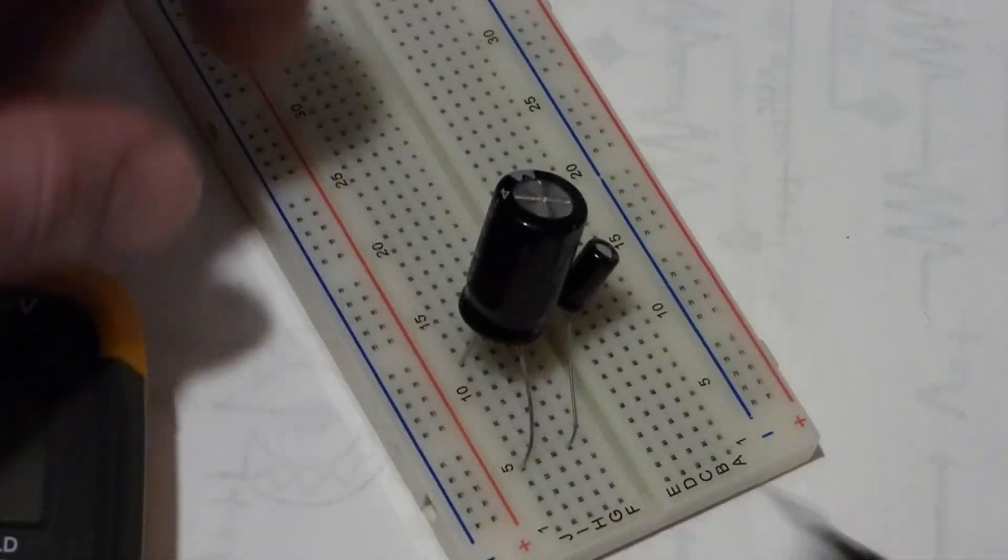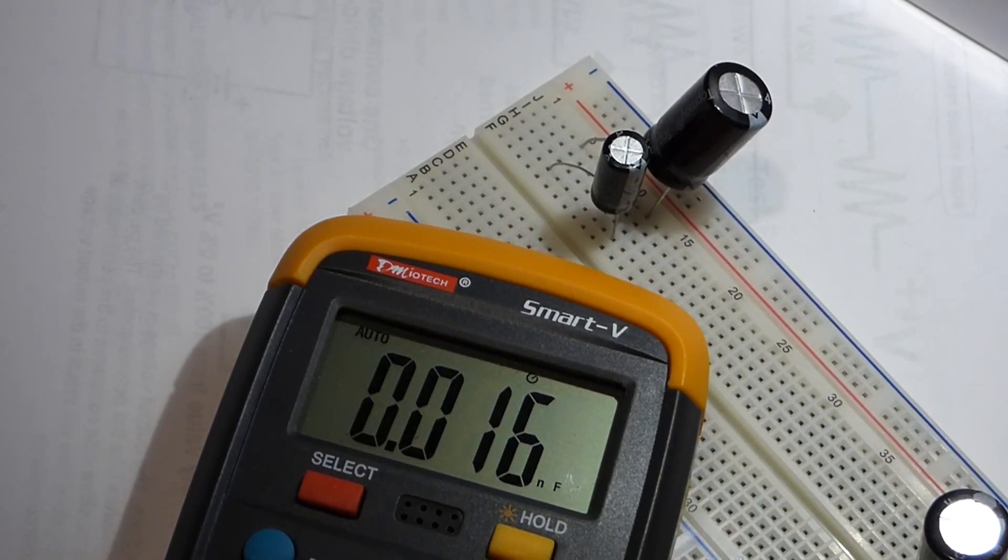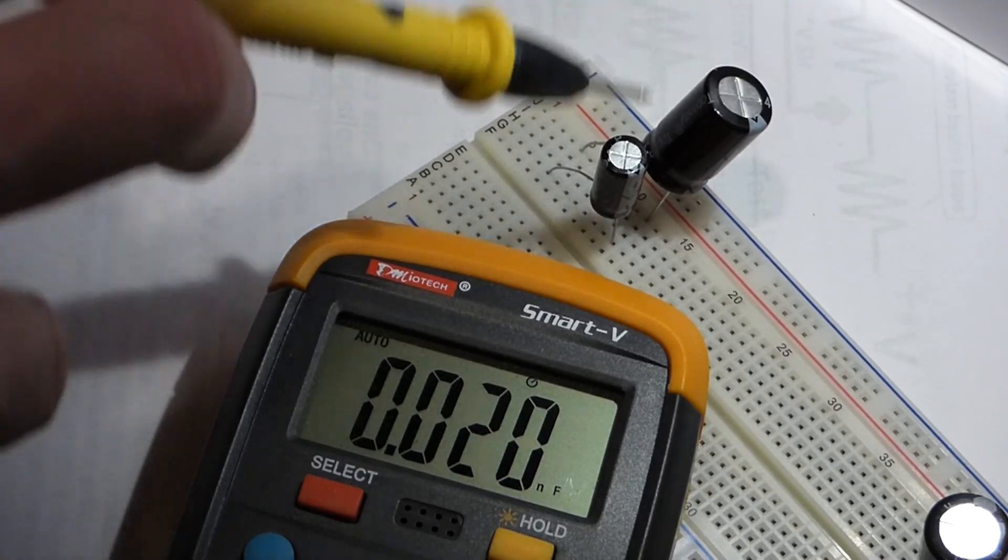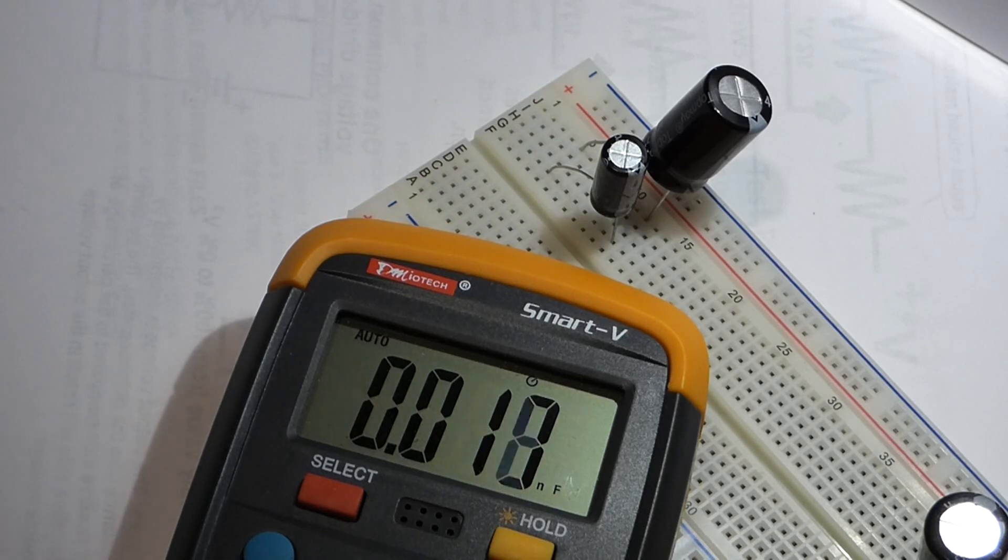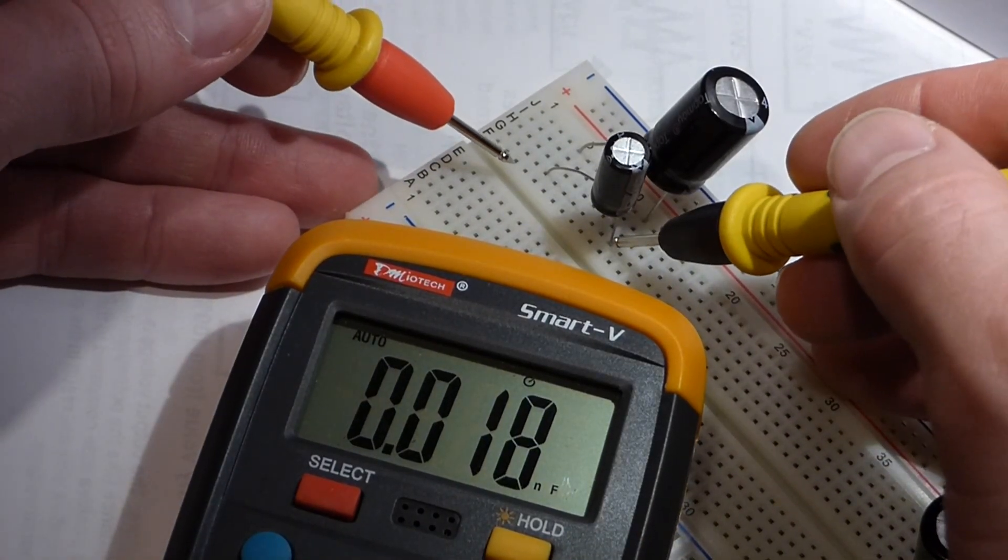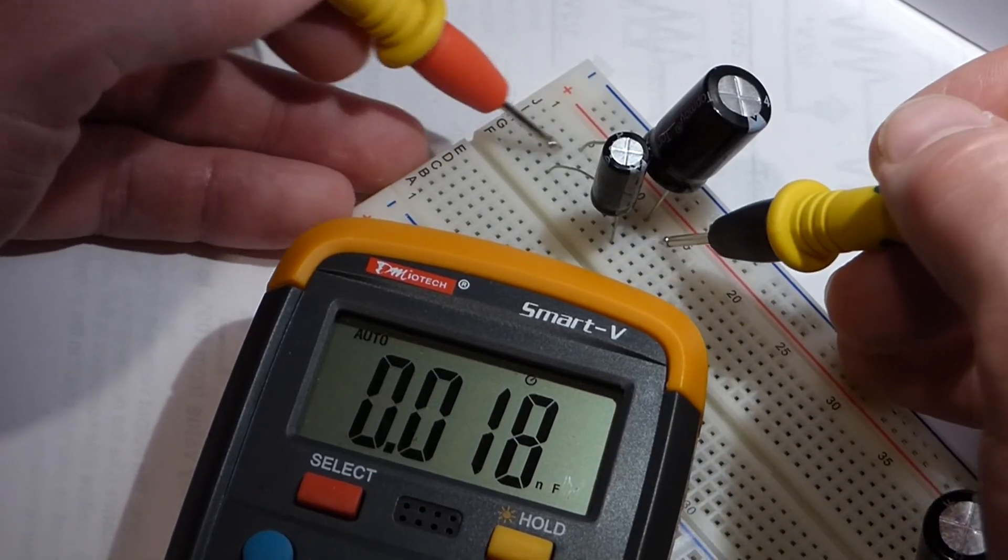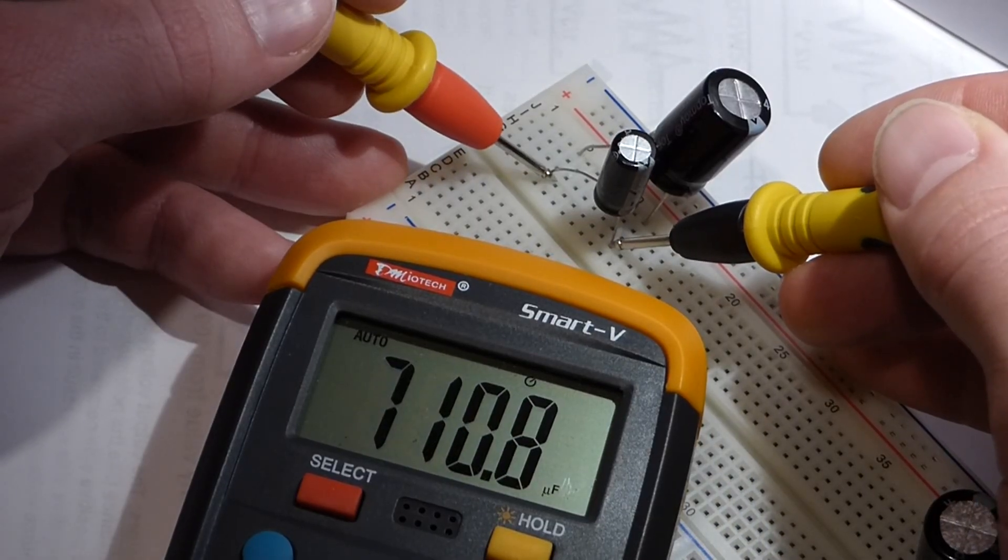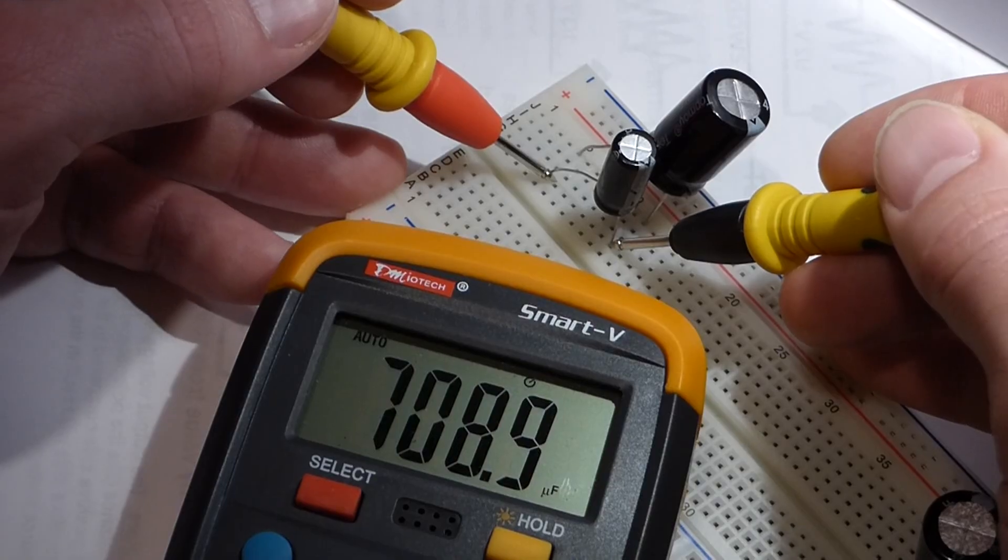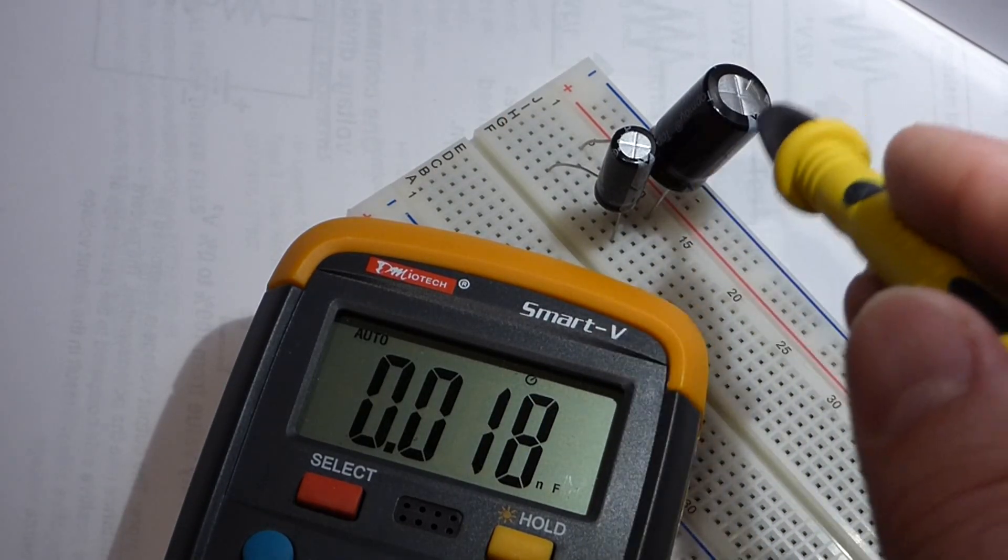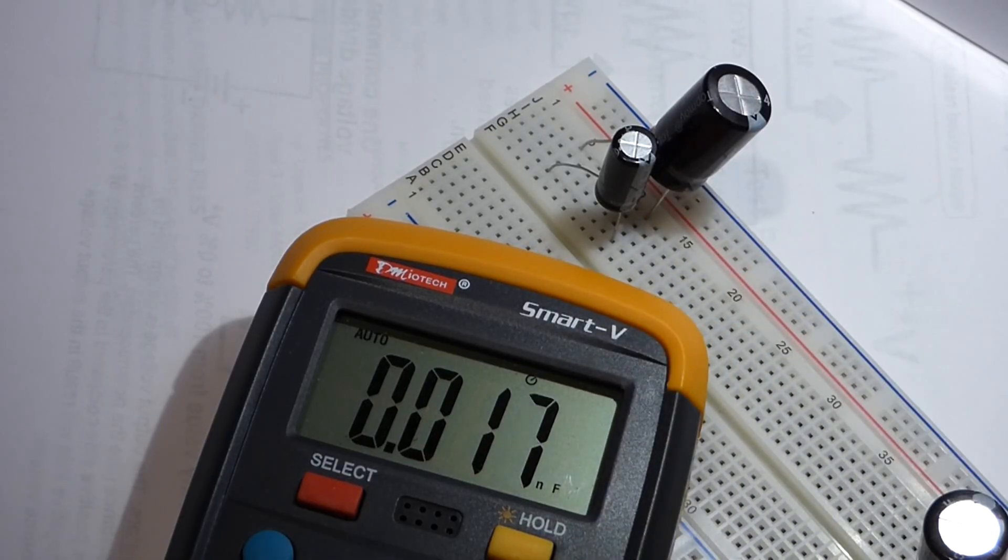So now we're going to throw in a 220 microfarad capacitor. That's as close to half of 470 as I can get. And we'll take a measurement. They're in parallel here. So the negative of each is connected and the positive of each is connected. And you'll see it gives a reading of 710 microfarad. So that's the microfarads of the two of them added together.